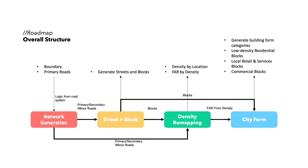The first part takes in the boundary and the primary roads and generates the network. The second one offsets roads from Part A and outputs the block outlines. The third one generates density by weighting the distance from blocks and roads. The last one generates buildings in three patterns based on FAR, and also generates towers for commercial areas. Our final output is the buildings for the whole city.